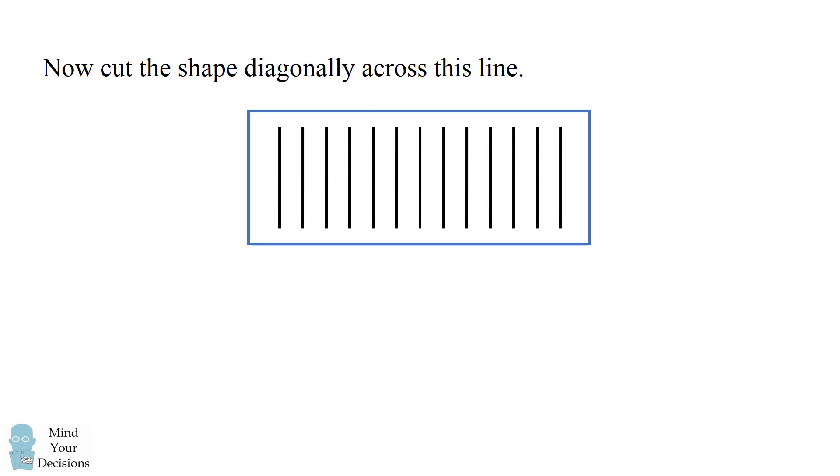Now very carefully cut the shape diagonally across this line. It goes from the top of the first line to the bottom of the last line. Once you make the cut, you'll have two pieces of paper.